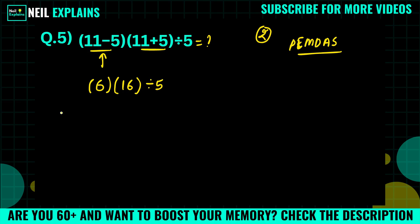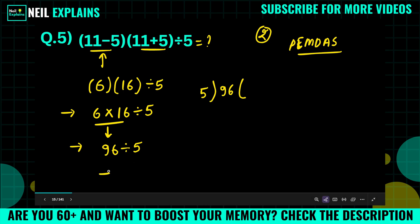In simple form we will write like 6 into 16 divided by 5, and we will multiply 6 into 16, then we will get 96 divided by 5.